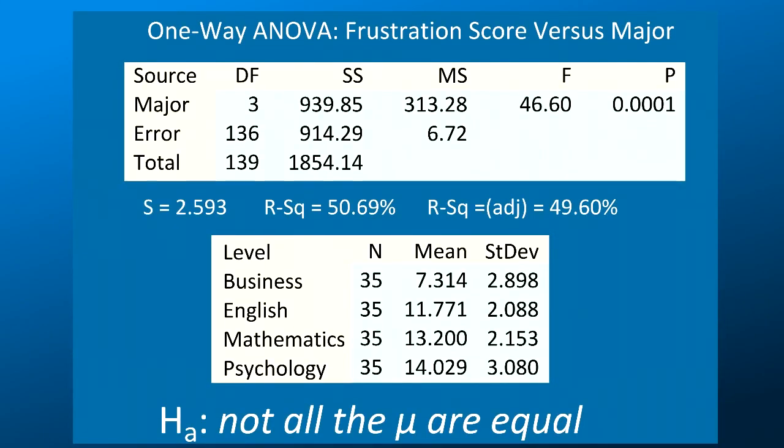Here are the results of the analysis of variance for country 2, testing the relationship between major and frustration score. The F statistic, circled in red, is 46.6. Since we know this is the variability among sample means divided by the variability within groups, this large number suggests that the variability among sample means is much greater than that within sample groups.